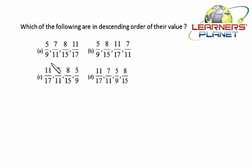Now in this question, which of the following are in descending order of their value? Let's see from the options: 5/9 and 7/11. The difference between numerator and denominator in both of these cases is 4, so definitely 7/11 will be greater than 5/9.